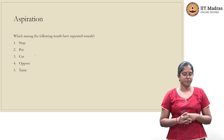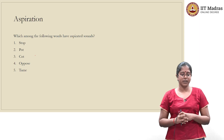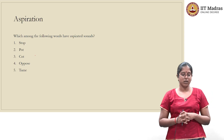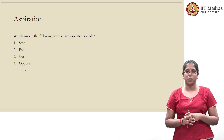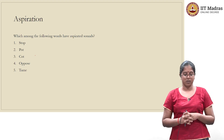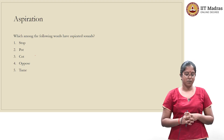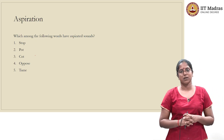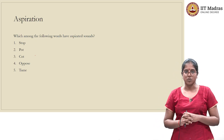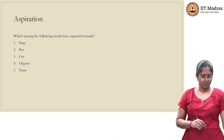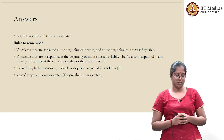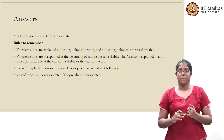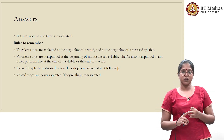The next set of questions is related to aspiration. The question is: which among the following words have aspirated sounds? The first word is stop, second is pot, third is caught, fourth is oppose, fifth is tame. Pause the video and work on the questions. The words that are aspirated are pot, caught, oppose, and tame.